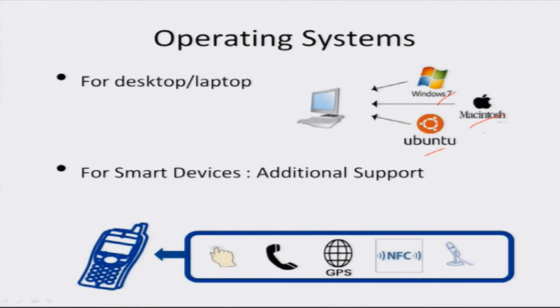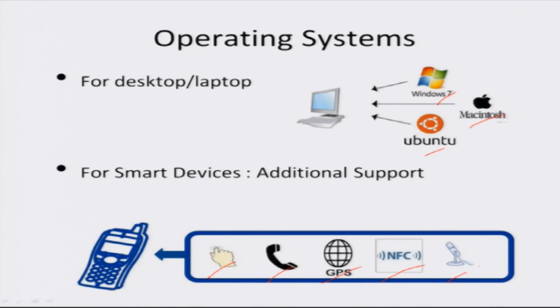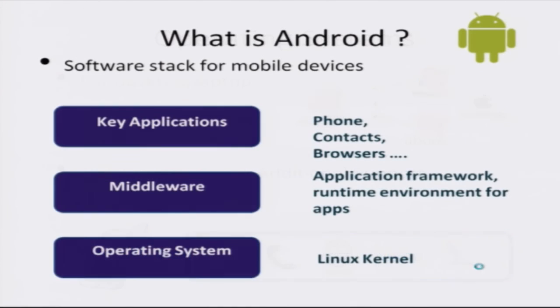For mobile devices we have additional sensors, like touch screen, cellular functionality such as calling and SMS, location management such as GPS, and more communication protocols like near field communication, Bluetooth. We also have sensors ranging from microphone to camera to accelerometer and many more. A mobile operating system needs to support all these additional devices, and Android is such an operating system which runs on mobile devices and supports all these additional drivers.